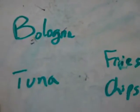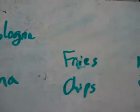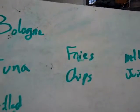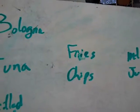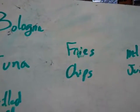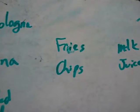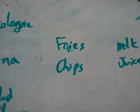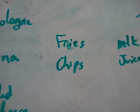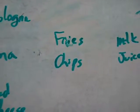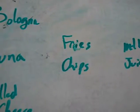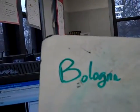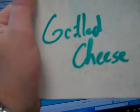The first one is bologna, fries, and milk. Then he can have bologna, chips, or juice. And then he can also have bologna, fries, and juice. And he can have bologna, chips, and milk. So it's four combinations of each one of these.